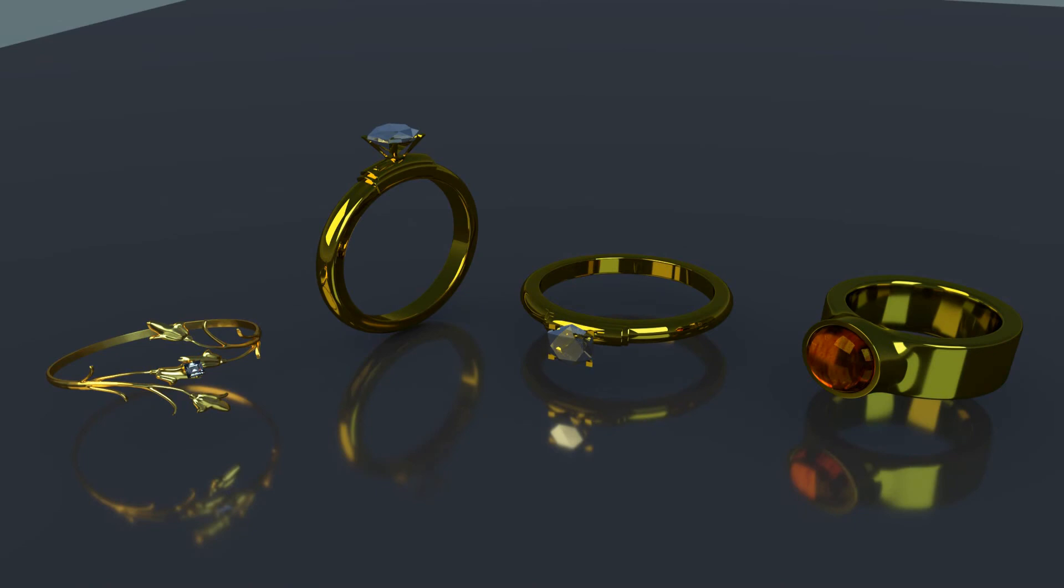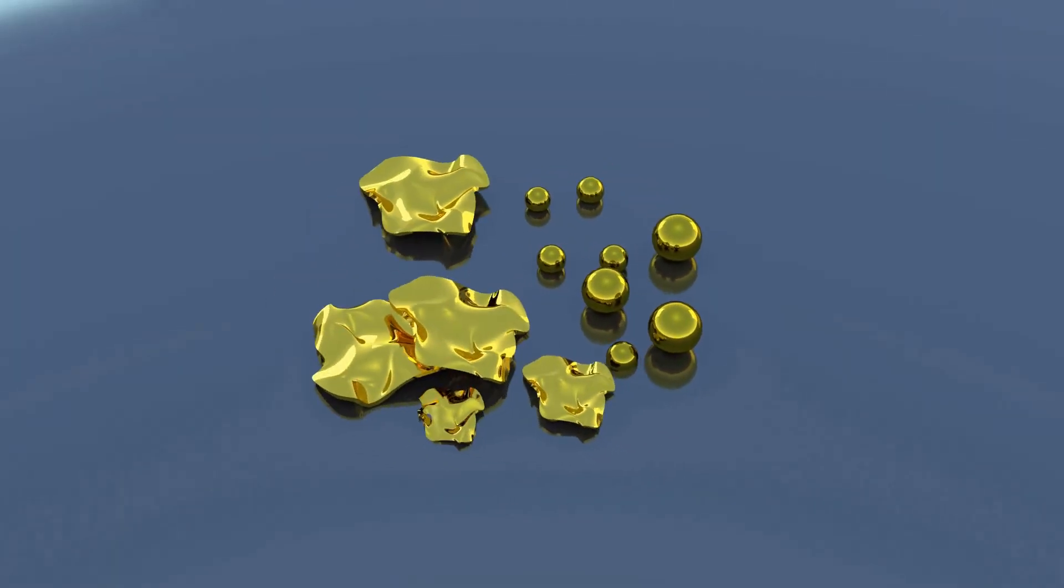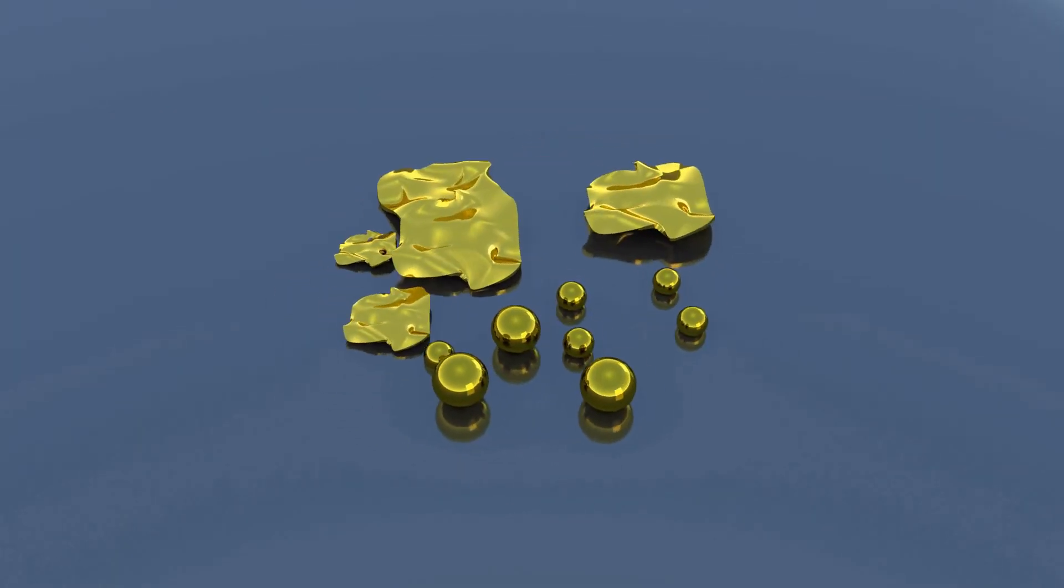Surface area. The greater the surface area, the faster the metal will dissolve. Filigree and ladies' rings have very high surface area. Gents' rings have low surface area. Shot, especially small or flat shot, has very high surface area.